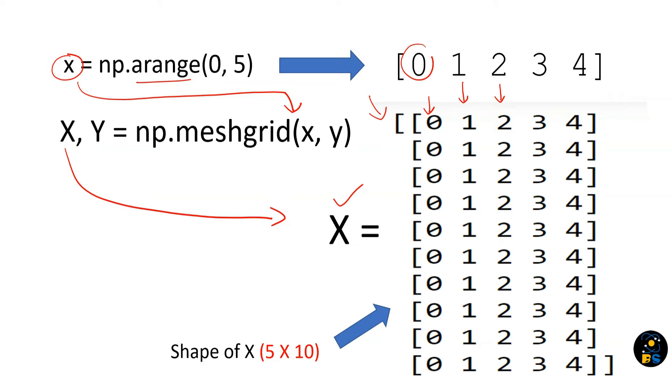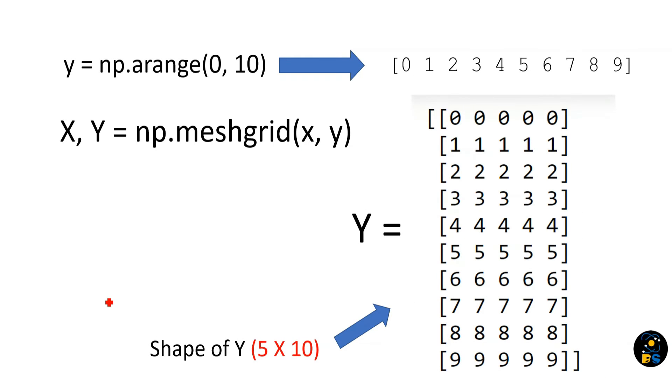It's important to see that we have the shape of 5 by 10, that is 5 rows and 10 columns. If you want to see what's happening to Y, a similar thing is happening but in a different way.